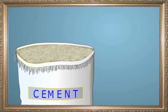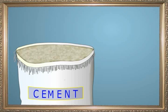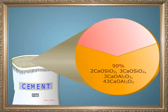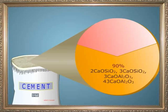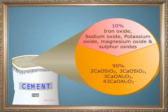What are the chemical constituents of Portland cement? Cement looks like grey dirty powder. 90% of it consists of calcium silicates and calcium aluminates — that is, 2CaO·SiO₂ or 3CaO·SiO₂ in the form of calcium silicates, and 3CaO·Al₂O₃ or 4CaO·Al₂O₃ in the form of calcium aluminates. The other 10% includes iron oxide, sodium oxide, potassium oxide, magnesium oxide, and dissolved sulphur oxides.